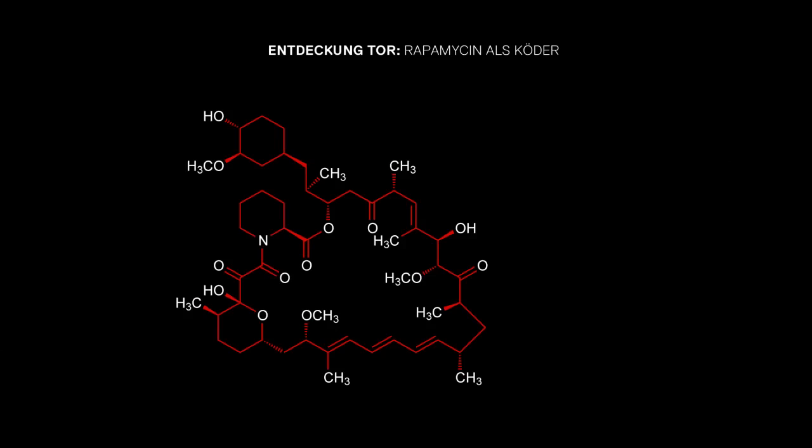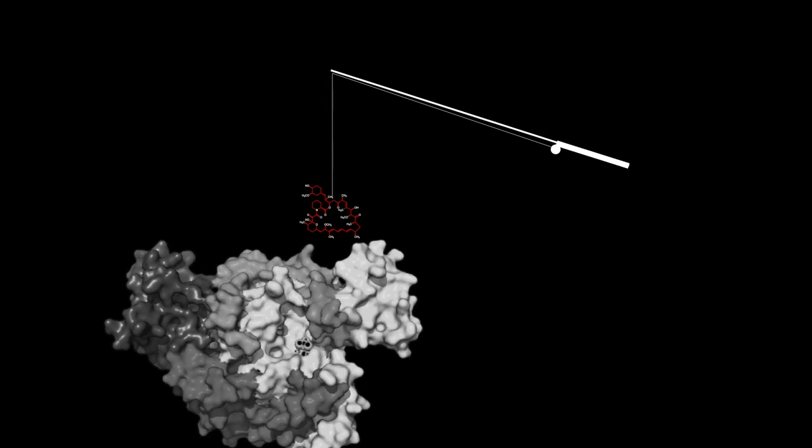So how did we discover TOR? Well, we used rapamycin as a sort of molecular bait, and we went fishing in a cell. A cell has about 10,000 different proteins and many copies of each one. We wanted to fish out the one particular protein which rapamycin binds. Rapamycin binds the TOR protein and inhibits it. So we used rapamycin as bait, and that bound specifically to the TOR protein and allowed us to isolate it.